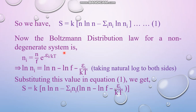Now, the Boltzmann distribution law for a non-degenerate system gives N_i equal to N over f times e to the power minus epsilon_i over kT. If the natural log is taken on both sides, this becomes ln N_i equals ln N minus ln f minus epsilon_i over kT. We can see ln N_i appearing in equation one, so we can substitute this expression for ln N_i in equation one.